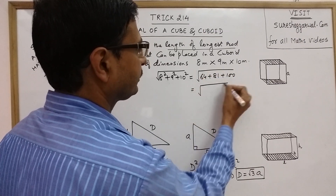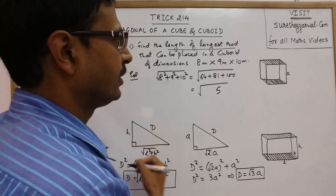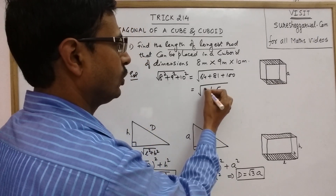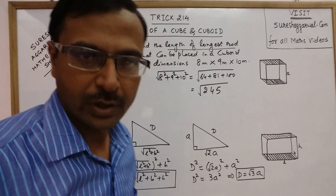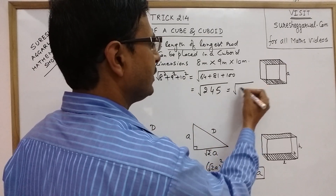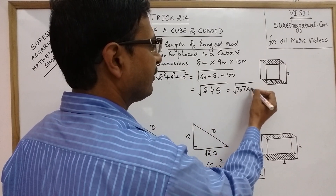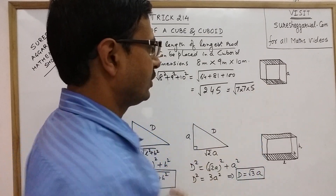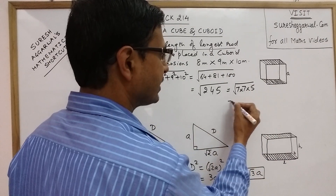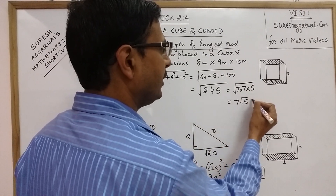That gives us √245. Reducing to factors: 245 = 7 × 7 × 5, so √245 = 7√5. Your answer is 7√5 meters — that is the length of the longest rod that can be placed in a cuboid of these dimensions.